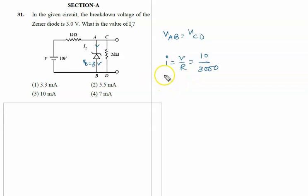So what is the voltage across CD? Voltage across CD is given by I, that is 10 upon 3000 into R, that is 2000. So finally we will get it is 20 by 3 or you can say 6 point something. This is the Zener voltage.